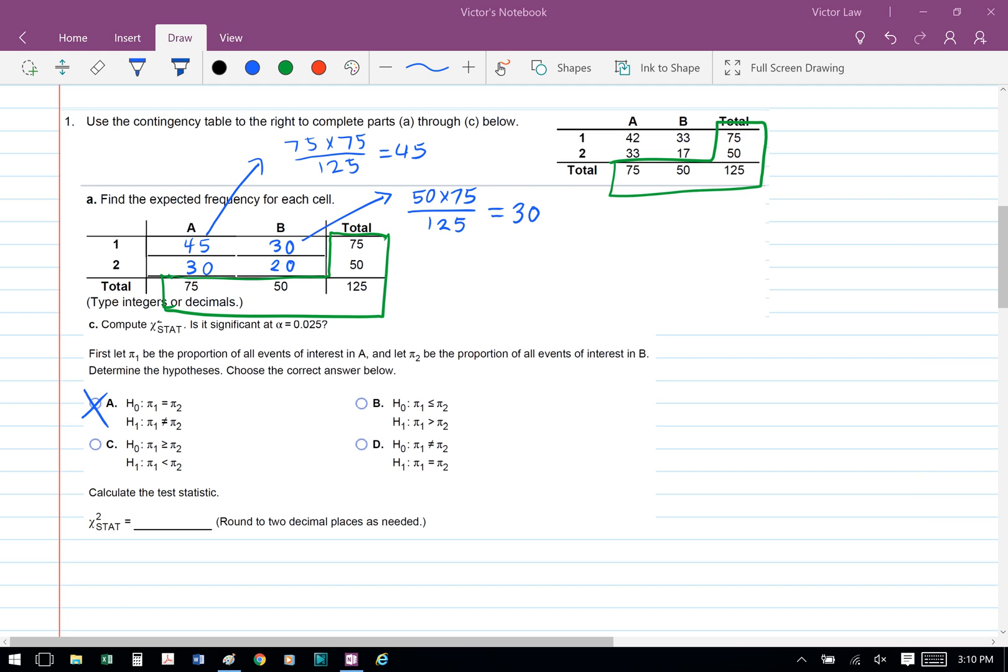Part C: Compute chi-square statistic. Is it significant at alpha equals to 0.025? In this question, our null hypothesis is that pi 1 equals to pi 2, and our alternate hypothesis is that pi 1 does not equal to pi 2. So the answer for part C is A.